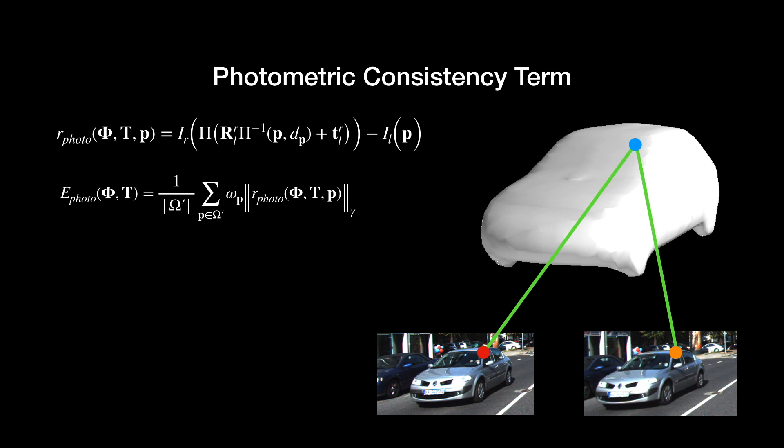A photometric residual can be obtained by comparing the pixel colors in two images. Summing up the residuals for all the pixels close to the object, and guarded by the Huber norm and an image gradient-based weighting factor ω_p, we get the photometric consistency term.